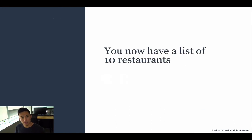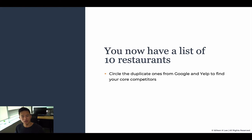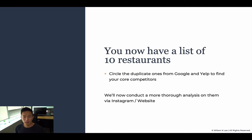After you have done that, you should now have around 10 different restaurants. Circle the duplicates that appear on both Google and Yelp to find your core competitors. After you've done that, we're going to conduct a more thorough analysis on them through their Instagram and their website.